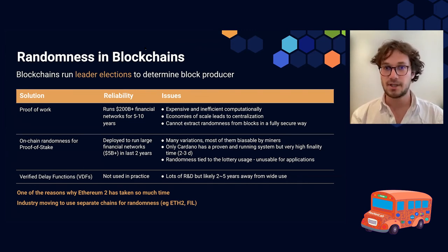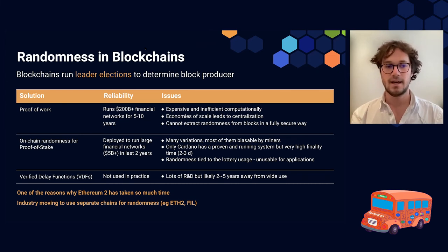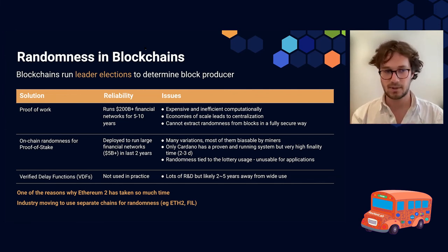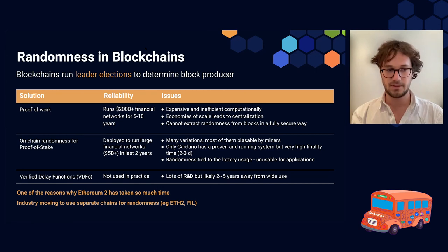What kind of randomness do we actually need? We need randomness which is unpredictable, so we can't predict the next numbers and bytes. We need it to be bias-resistant — the output should always follow a uniform distribution. It must be publicly verifiable, which is really important in all the use cases we're going to talk about today. We also want this randomness to be decentralized — we don't want a single party to control it — and available, so we can always rely on this system to get fresh randomness.